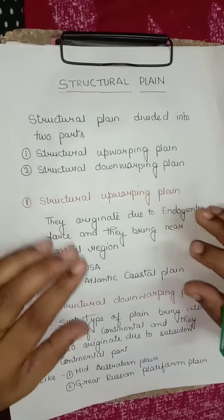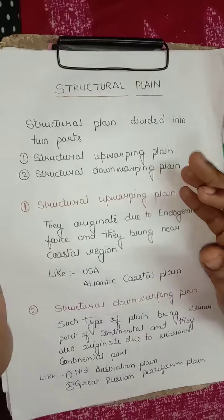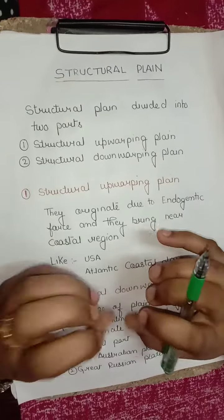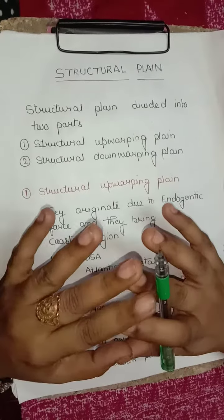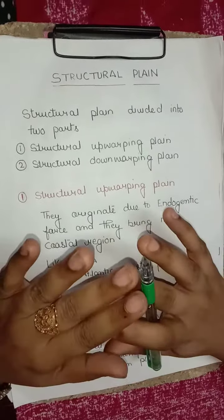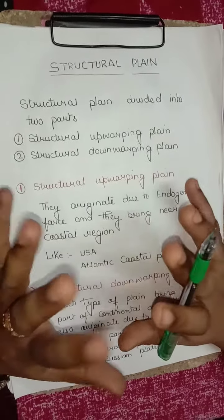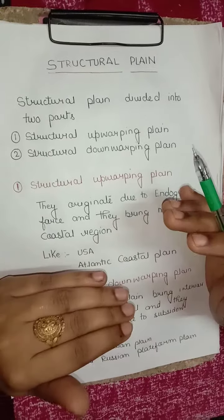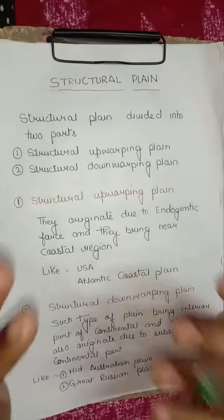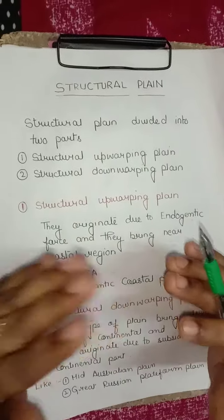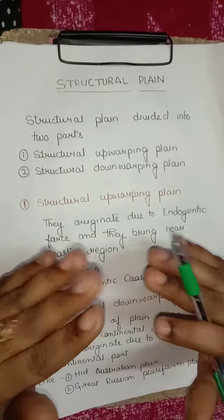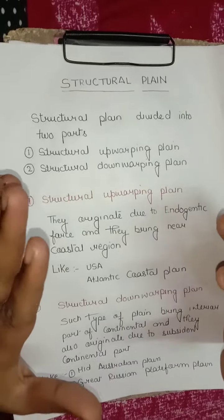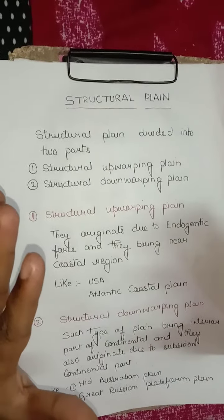Now we discuss in short. The slight flexing or bending of the earth's crust on a broad or regional scale — either upward, meaning upwarping, or downward, meaning downwarping — leads to the formation of a warp.